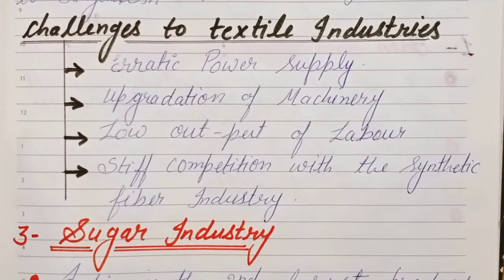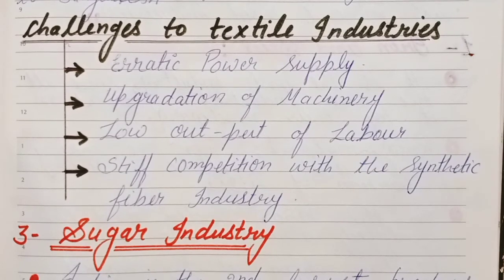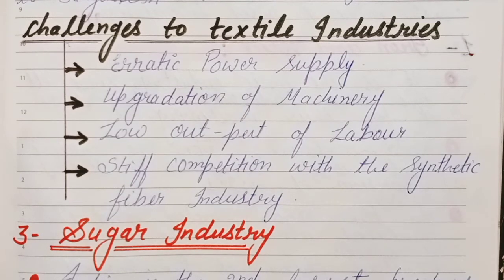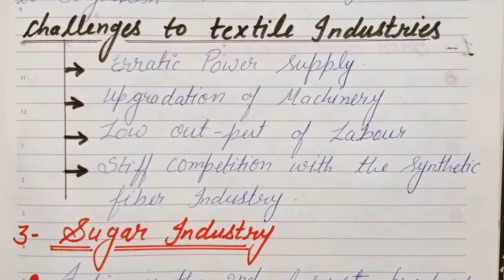The fourth challenge is stiff competition with the synthetic fiber industry. Synthetic materials like polyester and rayon are used today as alternatives to cotton and jute. Carry bags made from synthetic materials are cheaper. Because jute and cotton products are more expensive, people don't buy them, and as a result production has been reduced.